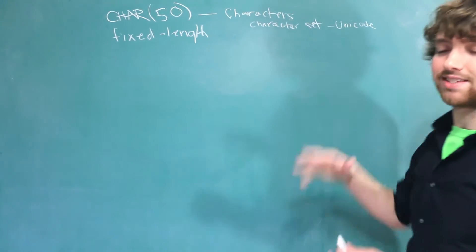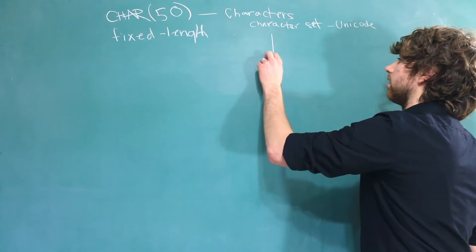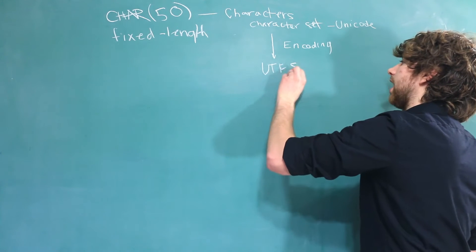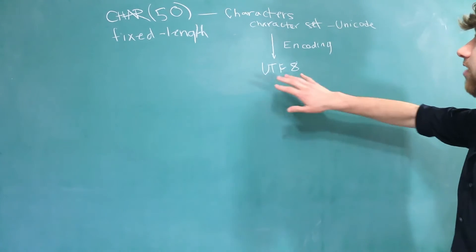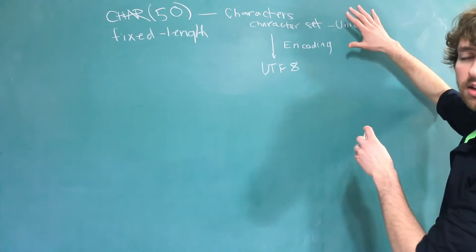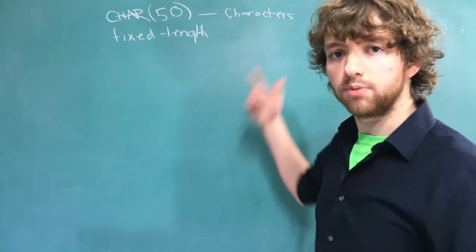Now the way this character set is actually interpreted by the computer is called the encoding. And the encoding that is used is known as UTF-8. So when you see UTF-8 think of a Unicode character set. Now you don't need to know all of the details of this. I just wanted to introduce you to it so then when you hear it you're not dumbfounded.